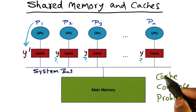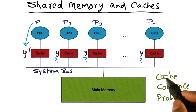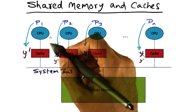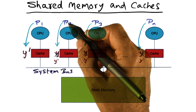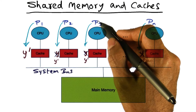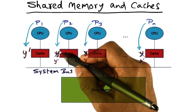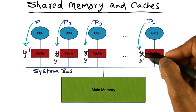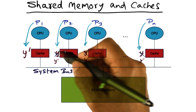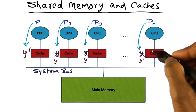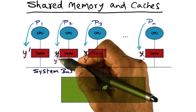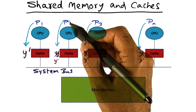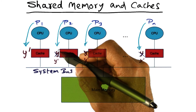This is referred to as the cache coherence problem. Someone has to ensure that if at a later point in time processor p2, p3, or any process that has memory location y in its private cache decides to access it, they should get y-prime and not y.